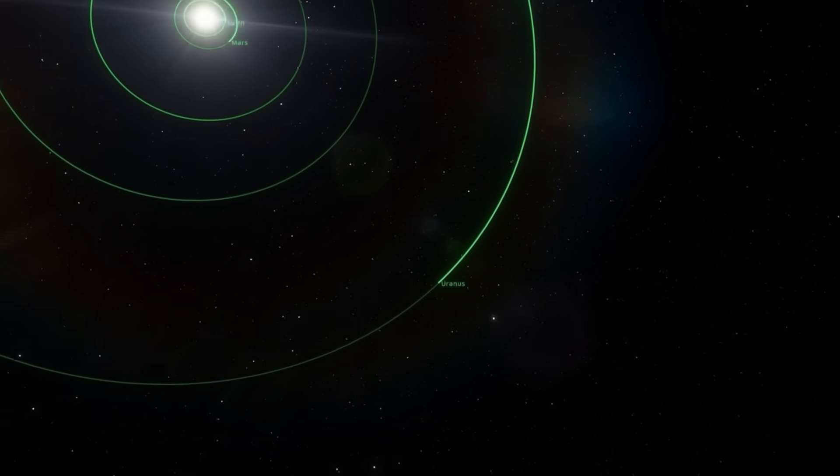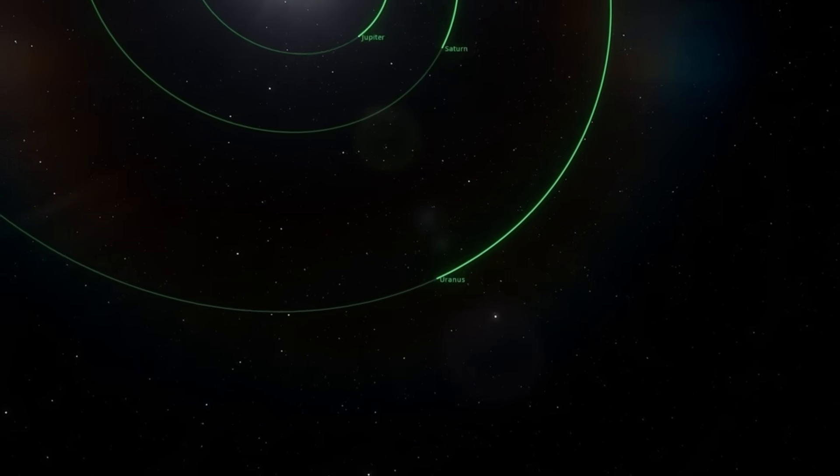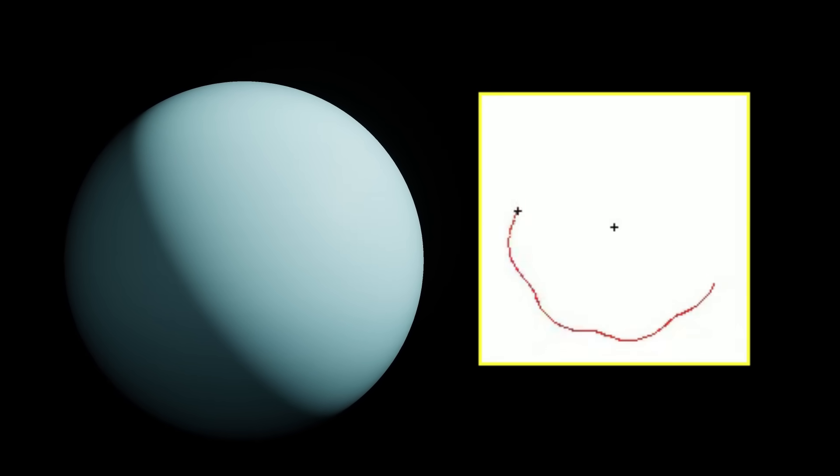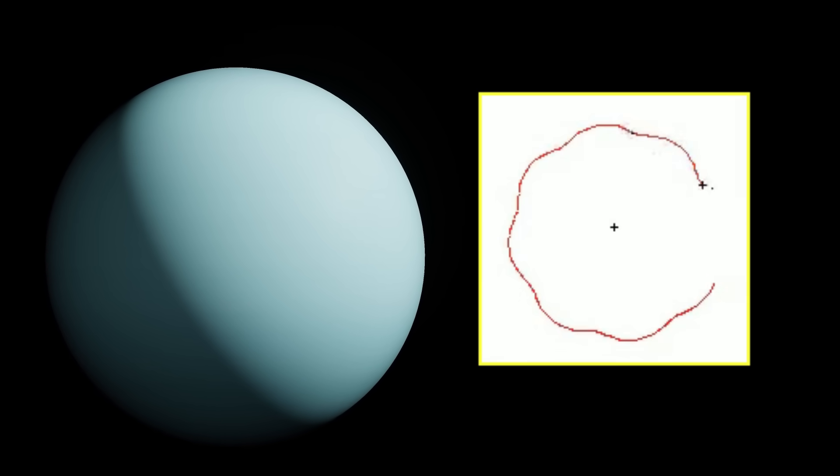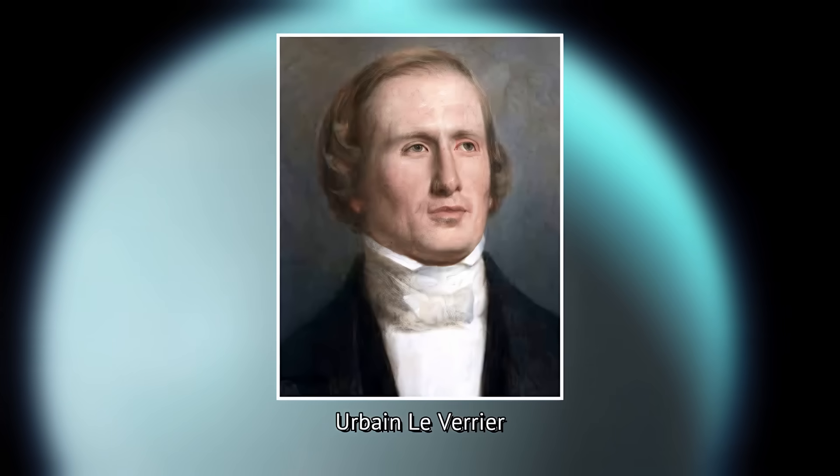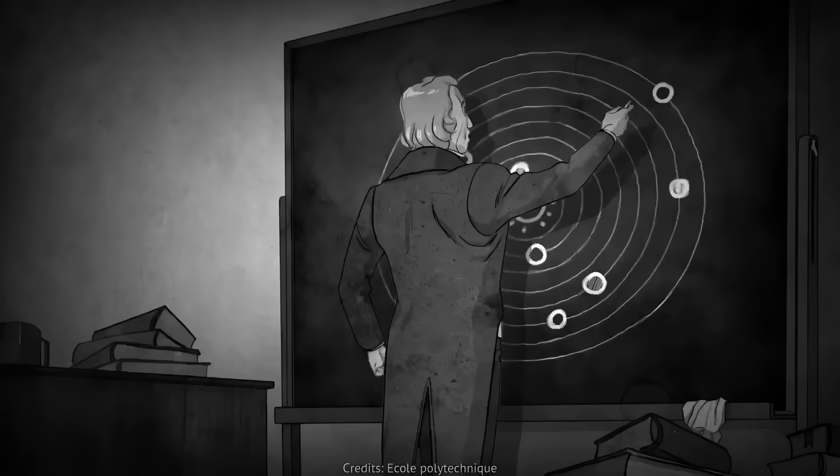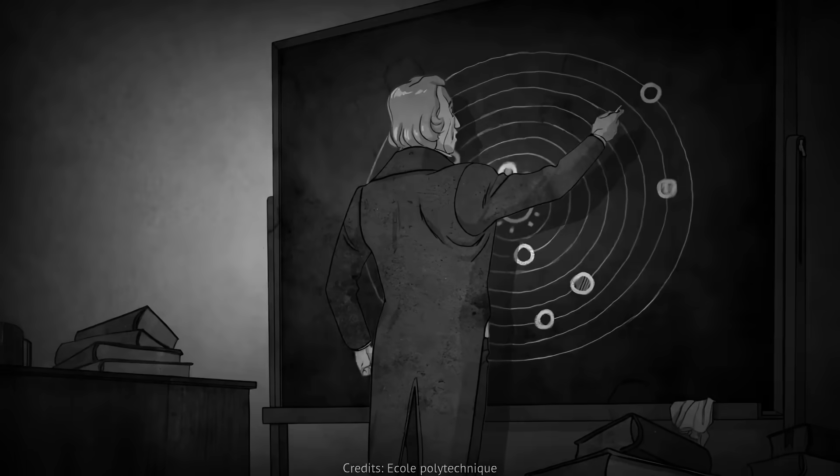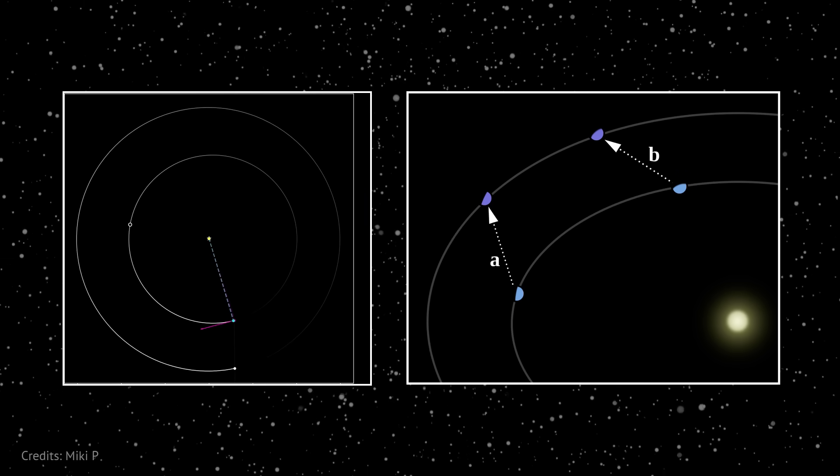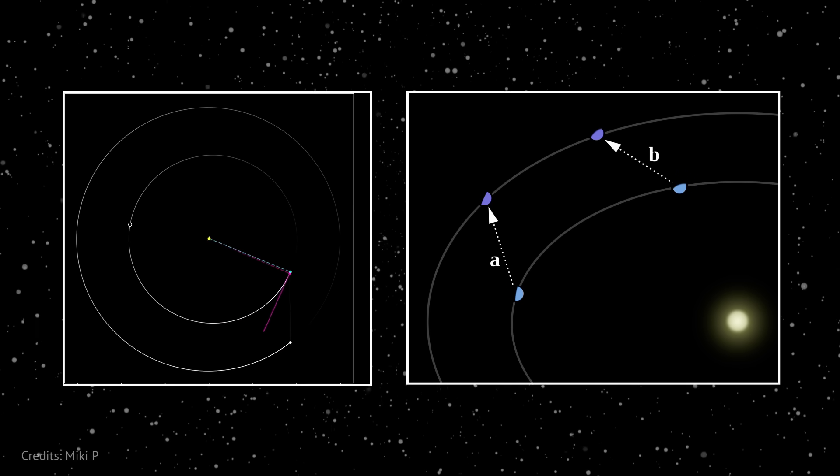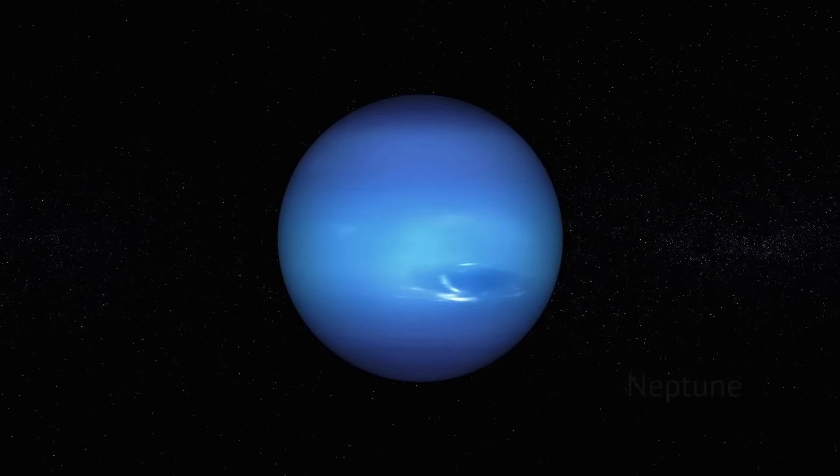But with more observations, astronomers realized Uranus didn't move the way Newton's laws said it should. Its orbit wobbled, just slightly, but enough to raise eyebrows. A French mathematician named Urbain LeVerrier worked it out with pencil and paper, and concluded that maybe there was another planet pulling on Uranus. He even calculated where this mystery planet had to be, based entirely on Uranus's strange behavior. And when astronomers pointed their telescopes at that spot in the sky, lo and behold, they found Neptune, right where the math said it would be.